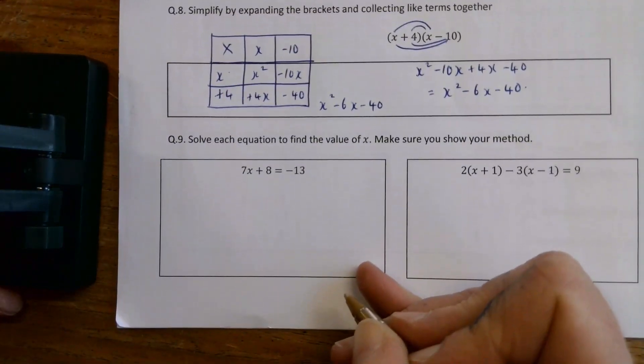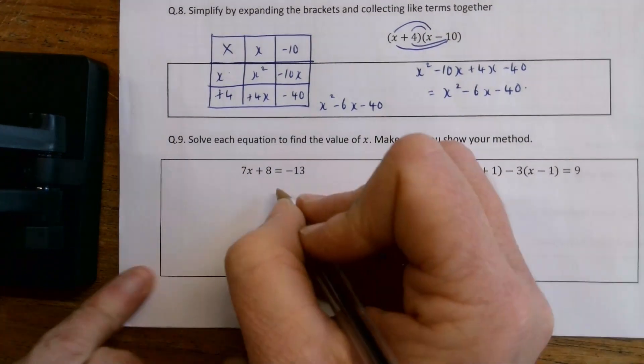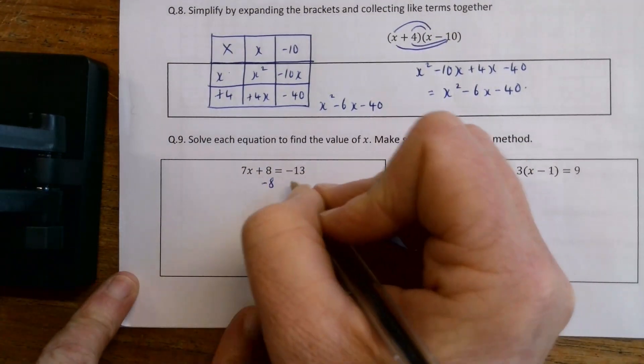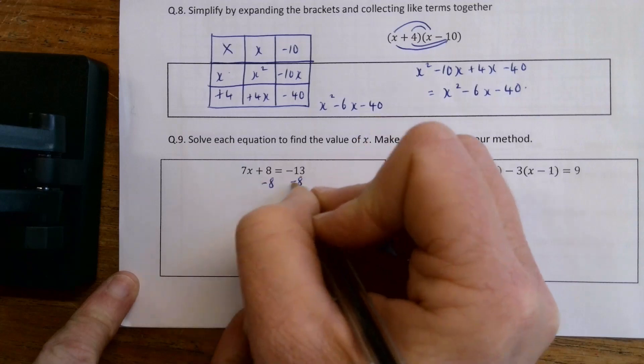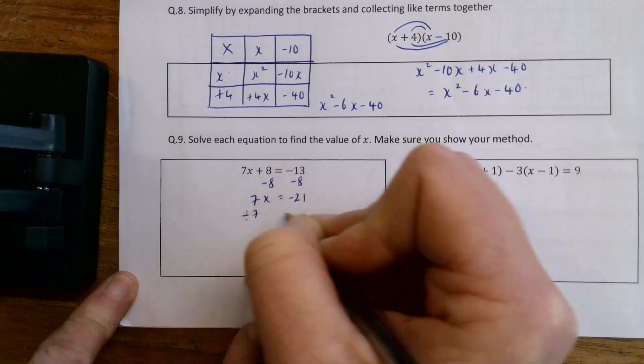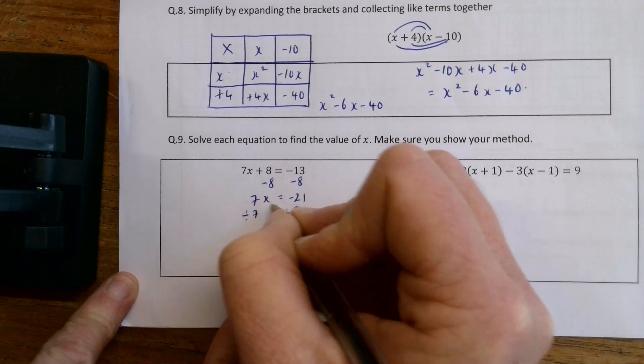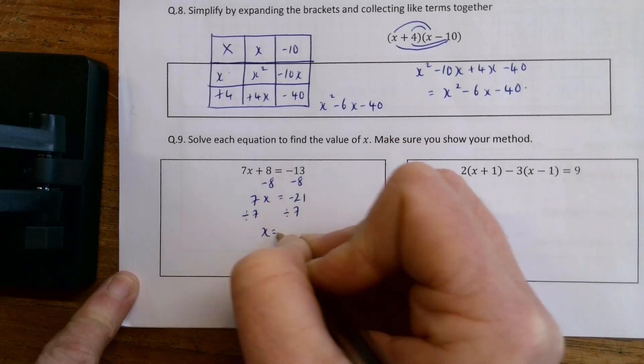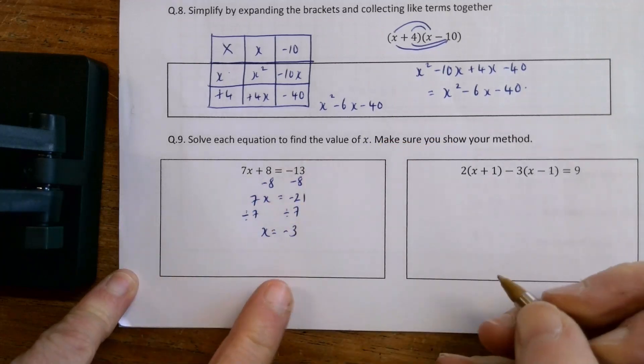Solve each of these equations and make sure you show your methods. So I'm going to get x's on this side, numbers on this side. So I'm subtracting 8 from each side. 7x is equal to minus 21. Divide by 7. Because 7 times x is minus 21. So x must be minus 21 divided by 7, which is minus 3.